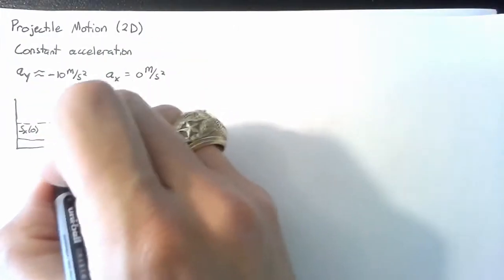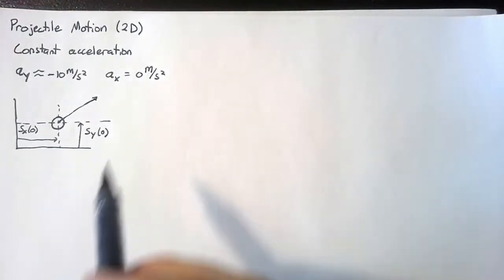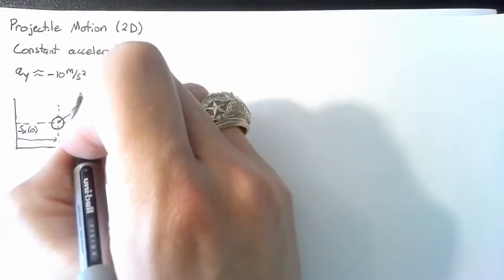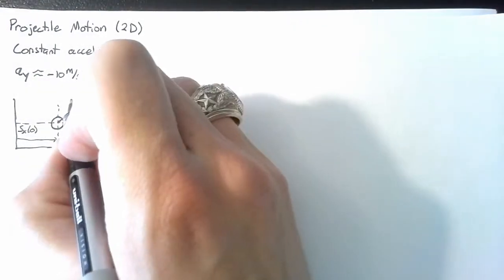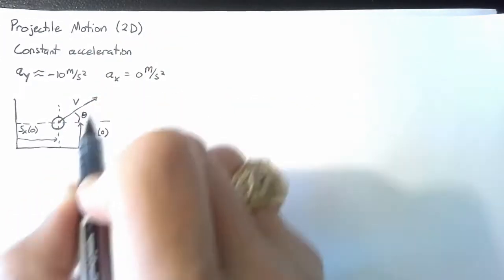And we also have a velocity in both directions. And this can be either two velocities, a vx and a vy, or it can be a velocity and a theta.